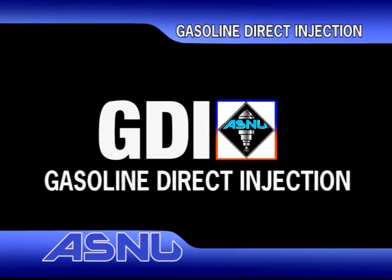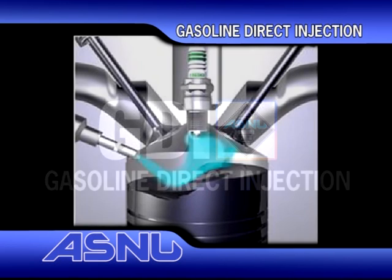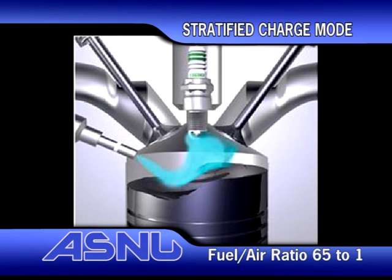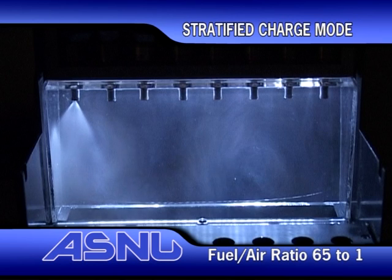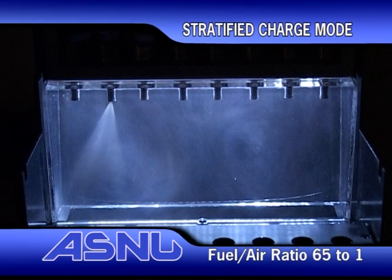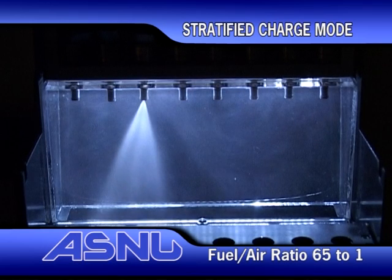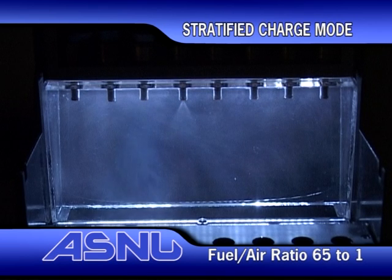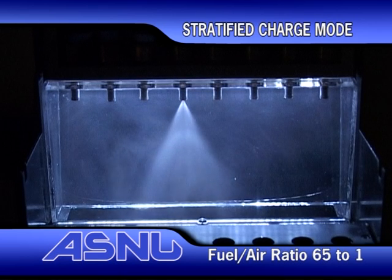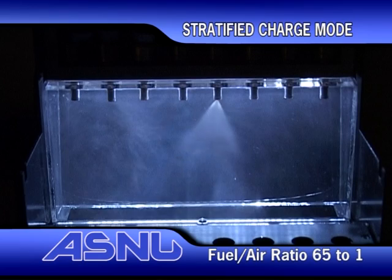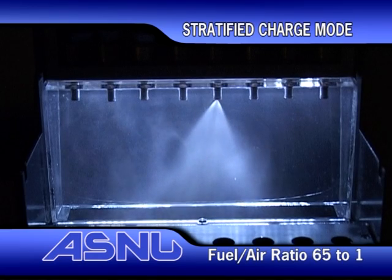The GDI system has two running modes: stratified and homogenous. Stratified charge mode is the economical combustion cycle. In some systems, the air to fuel ratio can be as high as 65 to 1. In this mode, the injector delivers a minimum amount of fuel into the combustion chamber just before the piston reaches the top and before the plug fires. This mode is used at idle and light throttle settings when the car is driven slowly.